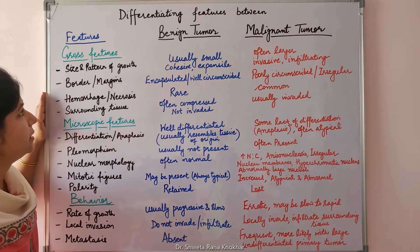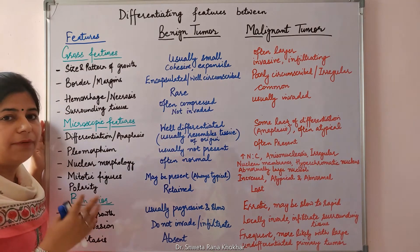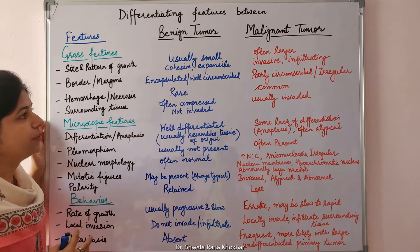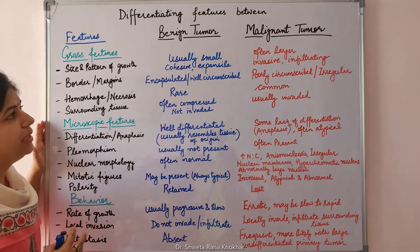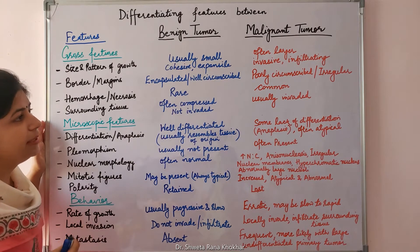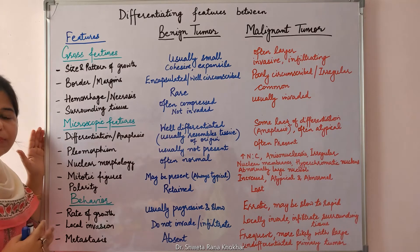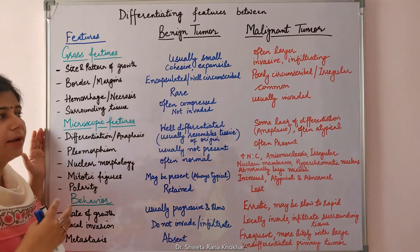Border or margins: benign tumors have a capsule, so they are encapsulated and well circumscribed. Whereas the malignant tumor is poorly circumscribed and the margins are irregular.